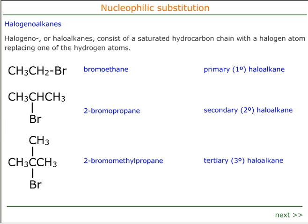Nucleophilic substitution of haloalkanes, also called halogeno alkanes. The first thing we need to know is that there are three types of haloalkane: primary, secondary, and tertiary. This is dependent upon where the halogen atom is attached to the hydrocarbon chain.